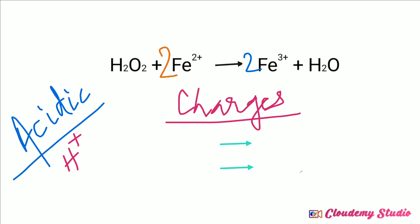Now we can check the charges of the equation. On the left hand side, hydrogen peroxide is a neutral compound, so there is no charge. Iron 2 plus ion has a charge of 2 plus, with a coefficient of 2, therefore 2 times 2 plus equals plus 4. On the right hand side, iron 3 plus has a charge of plus 3, and with the coefficient we multiply to get plus 6.